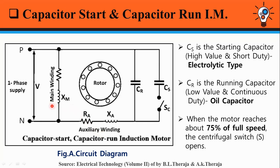The main winding is inductive in nature and the auxiliary winding is capacitive in nature, having two capacitors CR and CS with centrifugal switch SC. This motor has a squirrel cage rotor as shown in the figure.